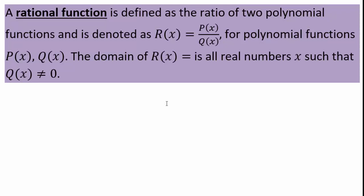When you do division of polynomial functions, you end up with something called a rational function. A rational function is one polynomial divided by another polynomial. It's very important to remember that the domain is affected by the denominator — the domain of p of x over q of x is given by all real numbers x for which the denominator function is non-zero.